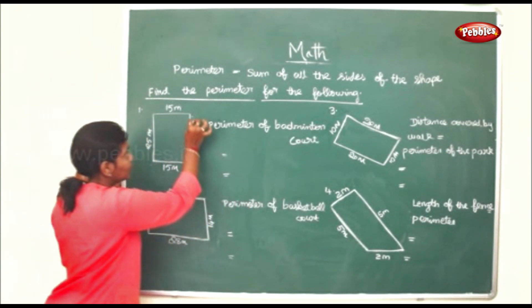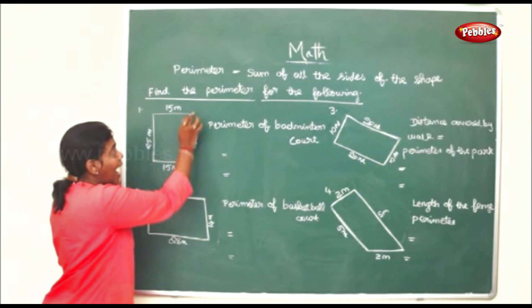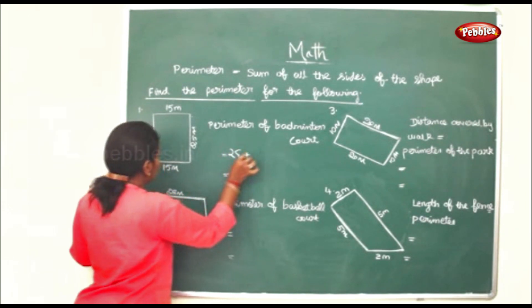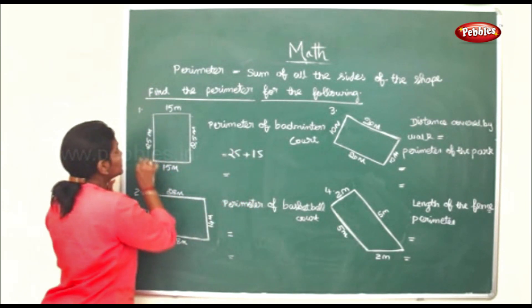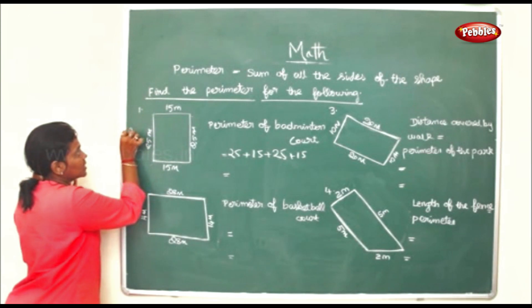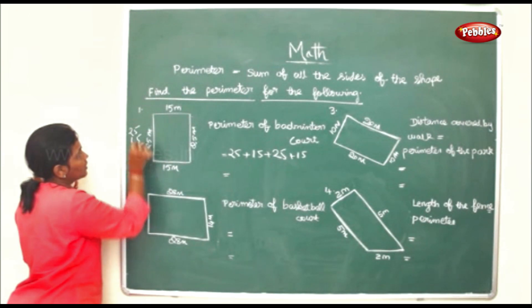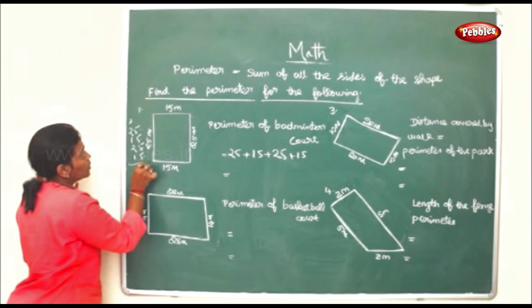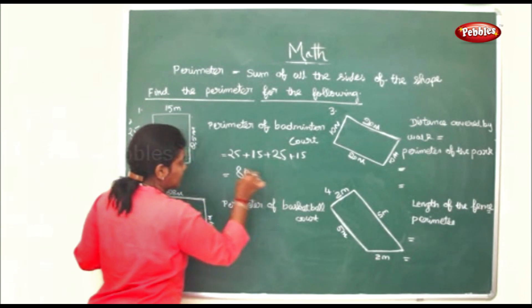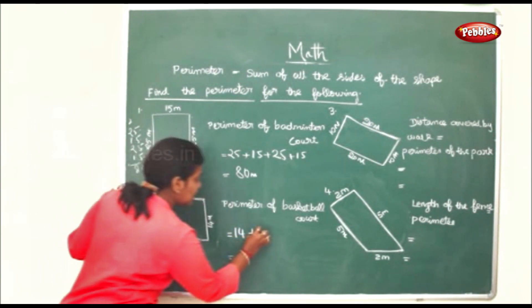For example, the perimeter of this badminton court: we will add 25 plus 15 plus 25 plus 15. So 25 plus 15 plus 25 plus 15 equals 80 meters.